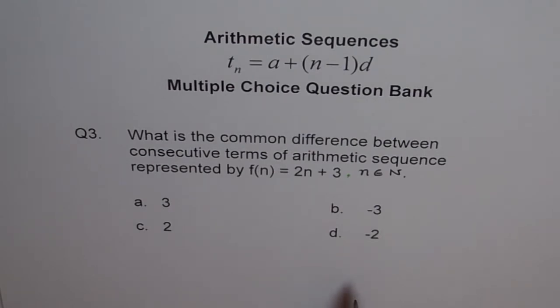For example, first term, second term, first and second are consecutive terms. And third term is consecutive to the second. Okay. Now, between consecutive terms, we should have common difference and that should be same if it is arithmetic sequence.